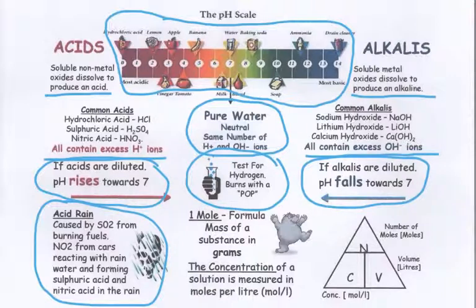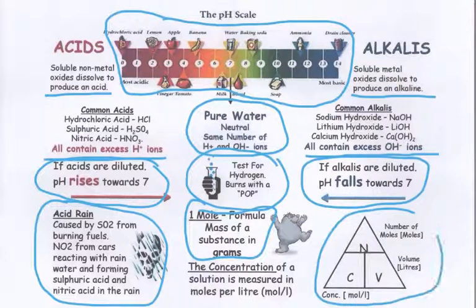We now start moving to quantitative methods of looking at material and we start thinking about something called a mole. A mole is the formula mass of a substance in grams. This will be talked about later. And we will need to look at how to work out concentration using this.